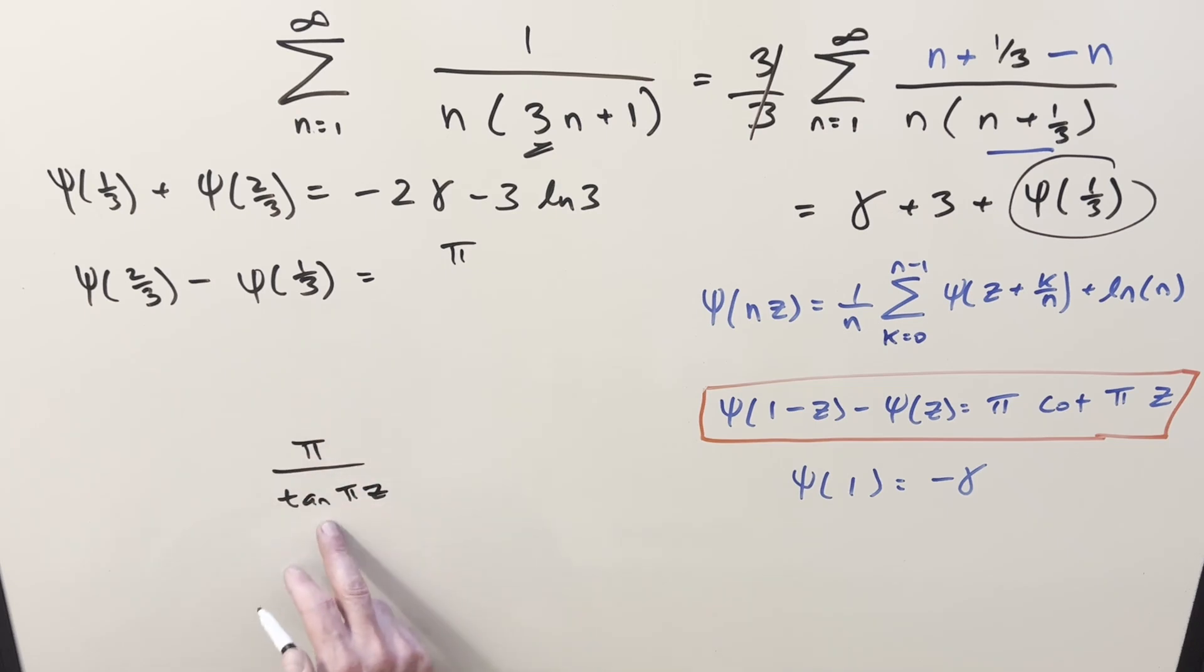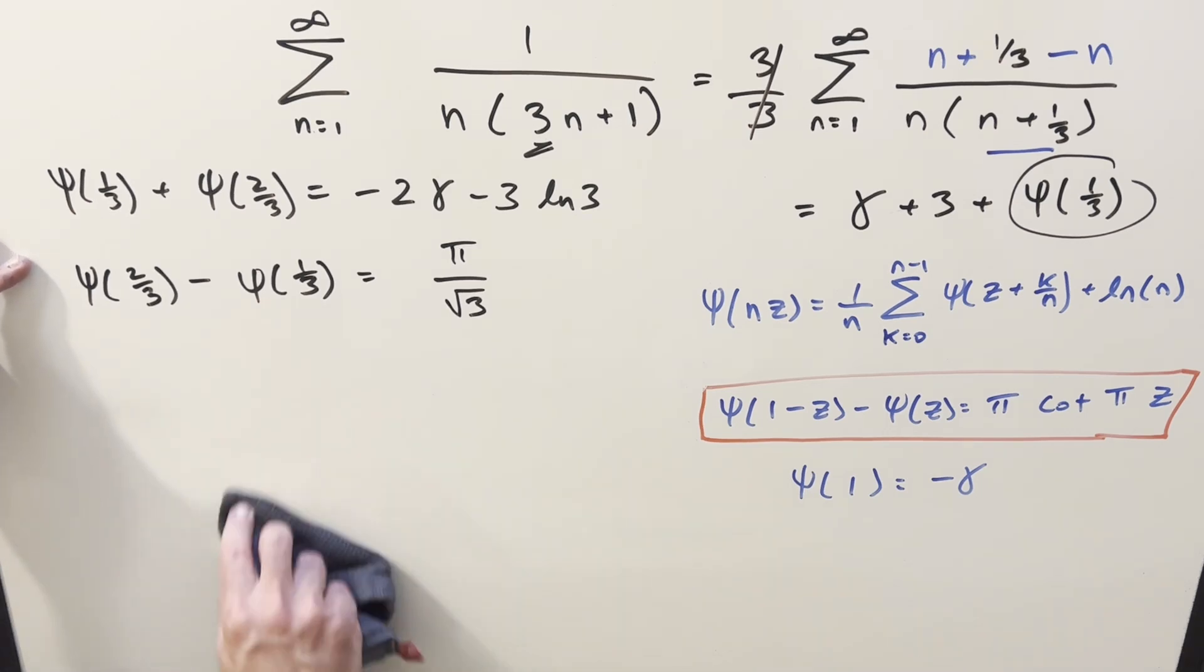So anyway, z is 1 third, so tan of pi over 3 is going to be just square root of 3. So this over here is going to be pi over square root of 3. And now here we've got our two equations, two unknowns.